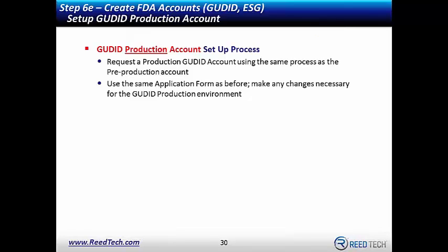Once you've confirmed that your SPL files are accepted successfully, you'll need to submit a new application to the FDA. Follow the same steps as for the pre-production account: request a GoodID account application, complete the document, and send it back to FDA along with the core IDs from the SPL files you've submitted.